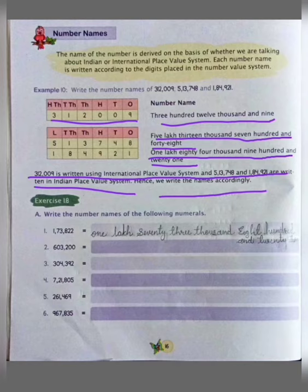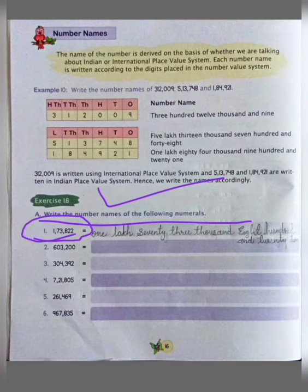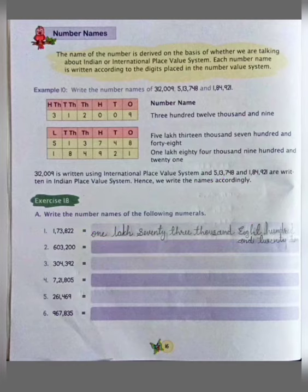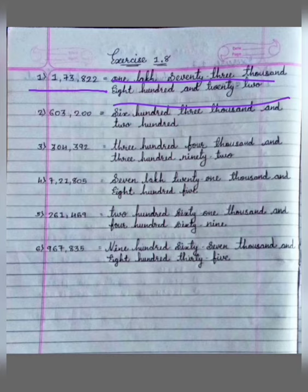So let's see exercise 1.8. Write the number names of the following numerals. Here we have to check whether it is the international or Indian place value system, then we have to write the number names. So see here: 1 lakh 73822 — this is the Indian place value system, and we will write 1 lakh 73822.